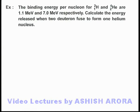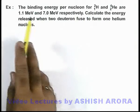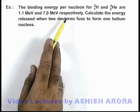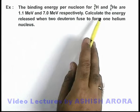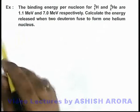In this example, we are given that the binding energy per nucleon for deuterium and helium are 1.1 and 7.0 MeV respectively. Here we are required to calculate the energy released when two deuterons fuse to form one helium nucleus.